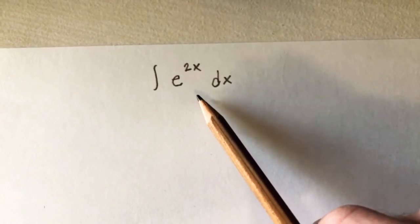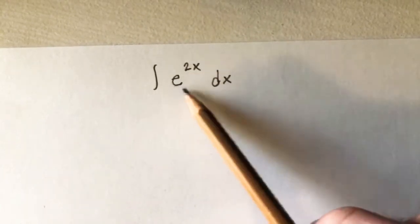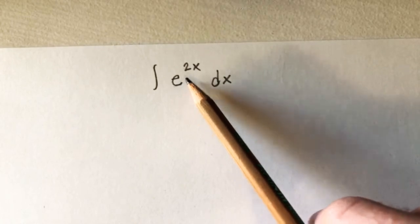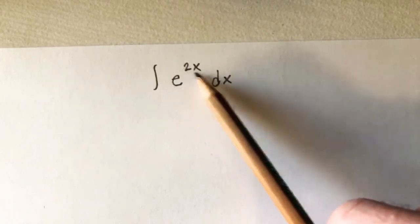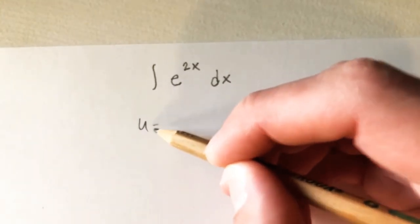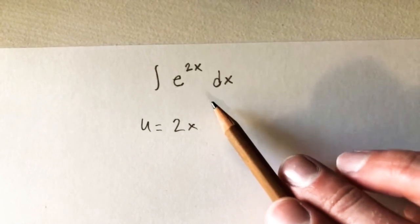And this is a weird one because if we consider the different options here, usually you don't want to make your u the entire thing. So if we're just looking for little pieces of it, if we make our u be 2x, that's kind of a weird one because the derivative of 2x is just 2, which there isn't a 2 in here anywhere. However,